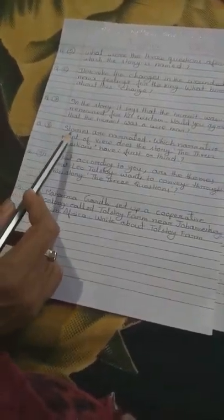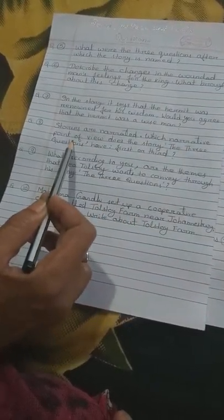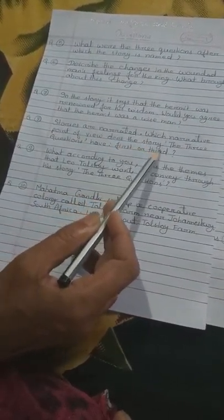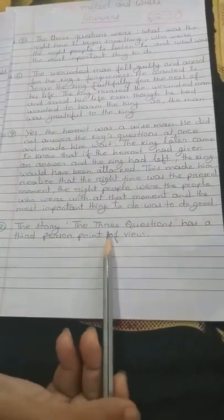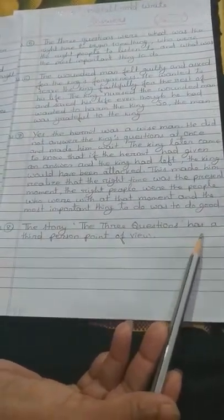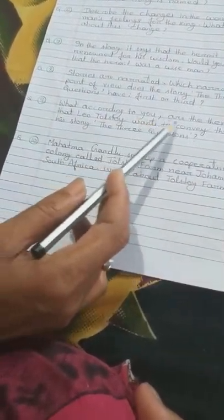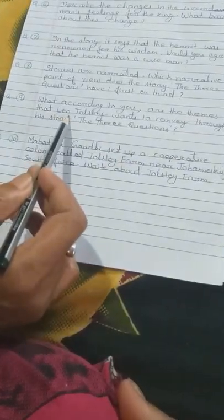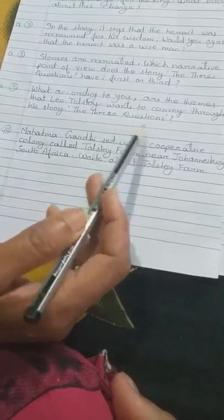Question number 8, stories are narrated, which narrative point of view does the story, the three questions have, first or third? Answer number 8, the story, the three questions has a third person point of view. Then question number 9, what according to you are the themes that Leo Tolstoy wants to convey through his story? The three questions.